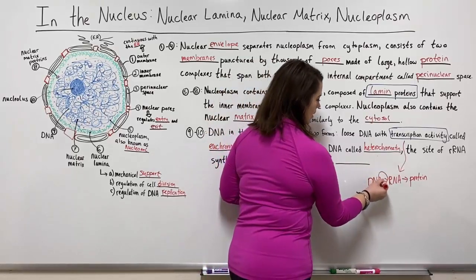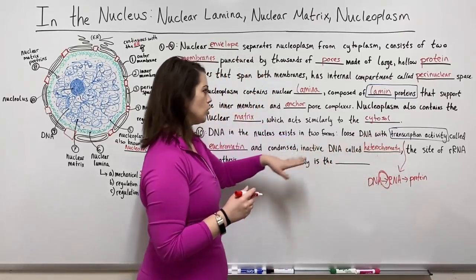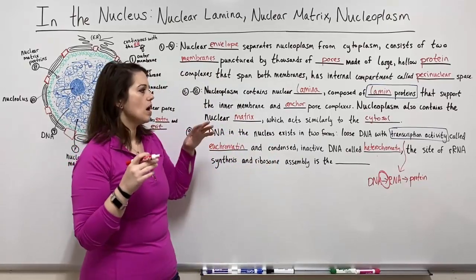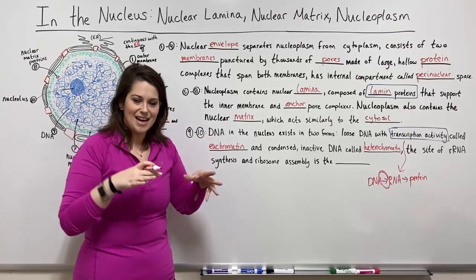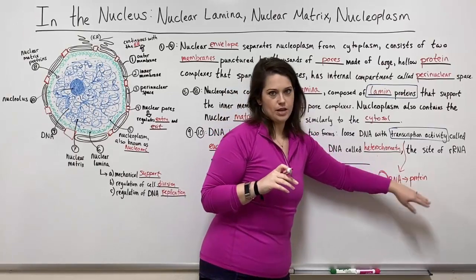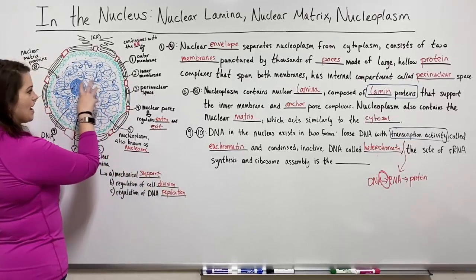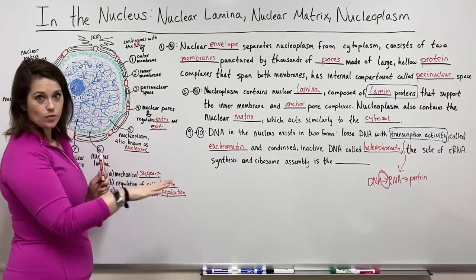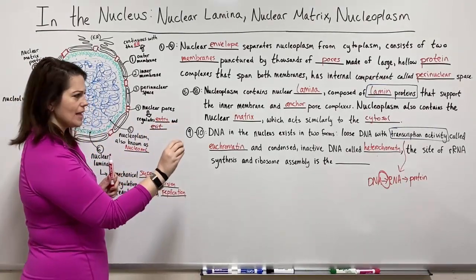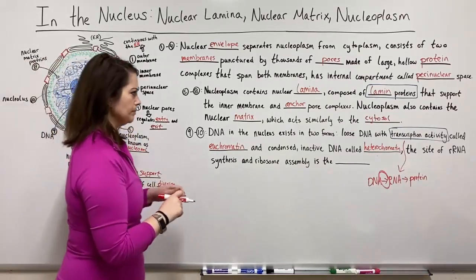That arrow is where transcription is taking place. When we say loose DNA, it's open and available for RNA polymerases to get in and transcribe the DNA to make the transcript that can then be used to make protein. The transcripts made during transcription in the nucleus have to get out into the cytoplasm to find a ribosome to be translated — and they exit through the nuclear pore complexes.